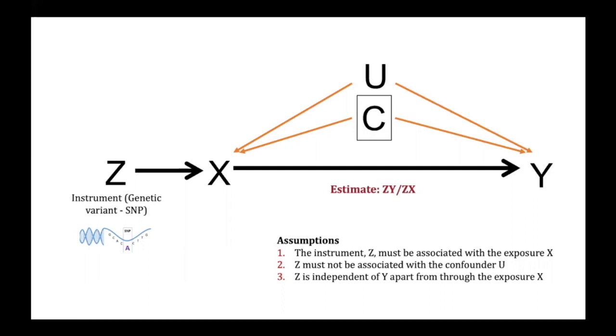For one, the instrument must be associated with the exposure, so this is the line between Z and X. This is why we use SNPs whose association shows p-values of less than 5 times 10 to the minus 8.